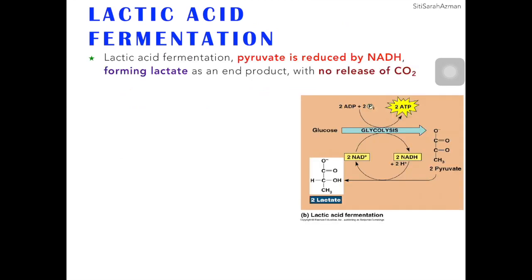The second type of fermentation is lactic acid fermentation. The process also happens after glycolysis. Pyruvate will form lactate in one step through a redox reaction. Pyruvate will be reduced and NADH will be oxidized — NADH loses electrons and becomes NAD+. That electron will be accepted by pyruvate, which is then reduced and forms lactate.